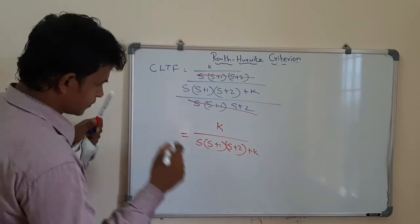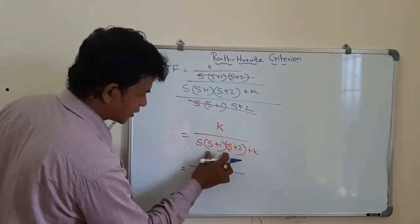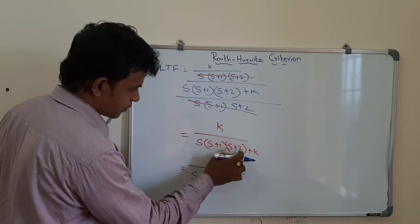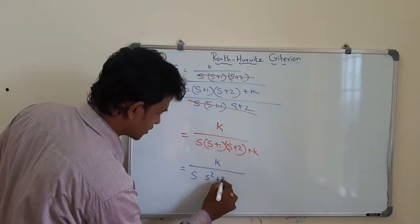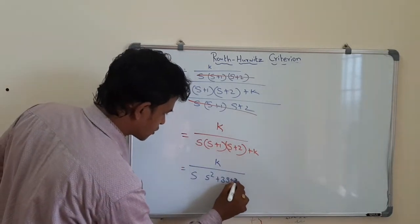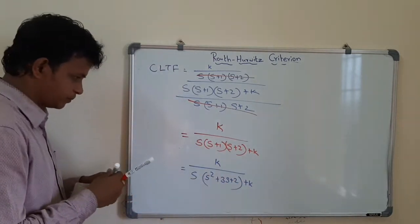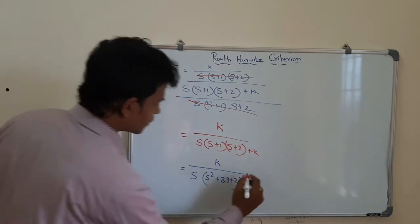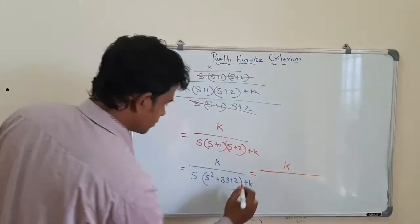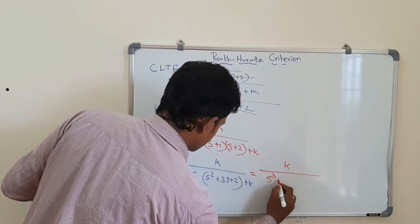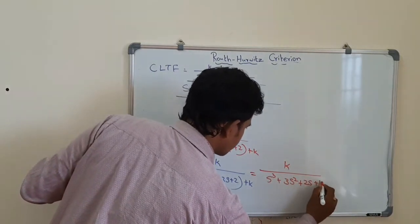Simplifying, G(s) is equal to k divided by s into (s+1) into (s+2), which gives s squared plus 2s plus 1 into (s+2), leading to s squared plus 3s plus 2 plus k in the denominator.